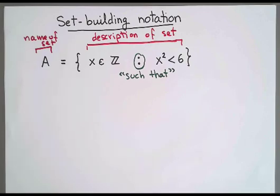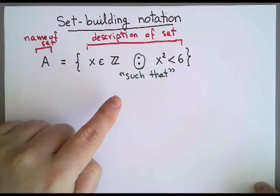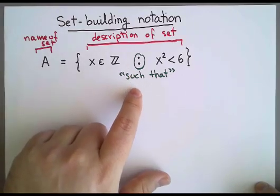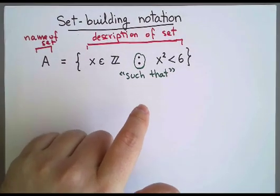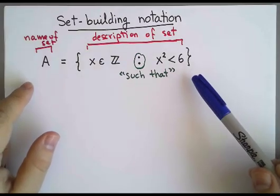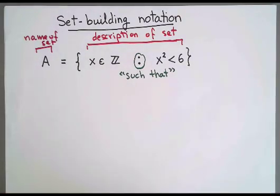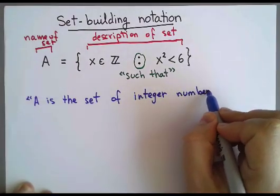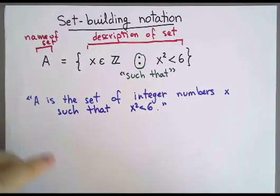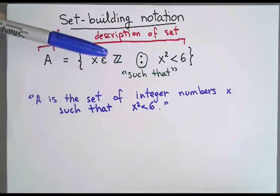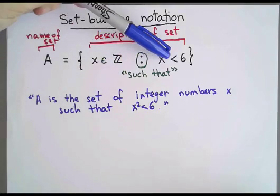Such that is a phrase that appears a lot in mathematics, and it's always in this very specific context when we are using it to construct a set this way, that we write it as colon. In any other context, don't use colon. Colon only means such that for this specific use. So once I put it this way, I can actually interpret this sentence and read it in English. What this means is that A is the set of integer numbers x, such that x² is less than 6.